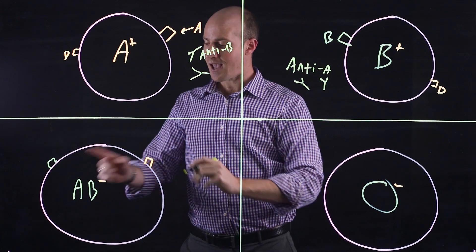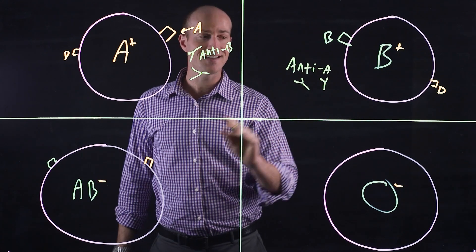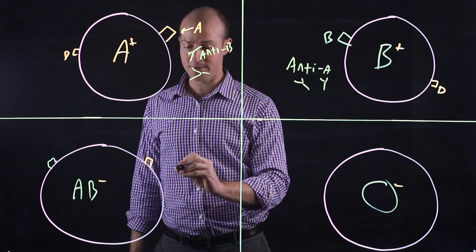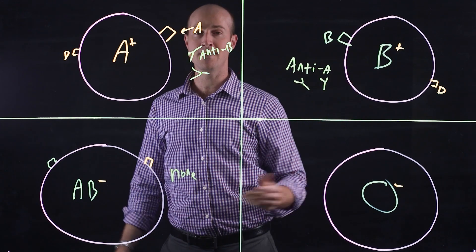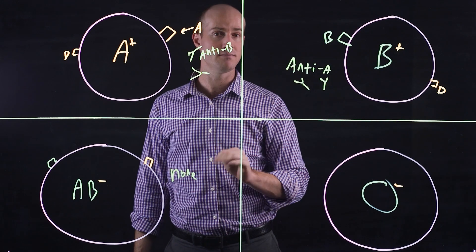Now AB has both A and B, so it actually doesn't have any antibodies. It has none, it's fine. Which means if I put B into AB, no worries. If I put A into AB, no worries.